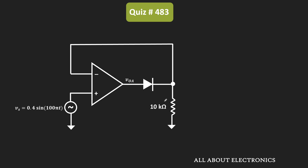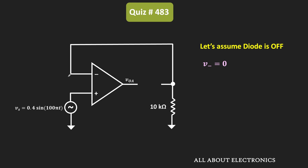So initially, we do not know whether this diode is conducting or not. So for a moment, let's assume that this diode is in the OFF condition. Whenever this diode is in the OFF condition, it will act as an open circuit. In this condition, the voltage at this node or the inverting node will be equal to 0, because this inverting terminal is connected to the ground terminal through this 10K resistor. That means this V- is equal to 0.